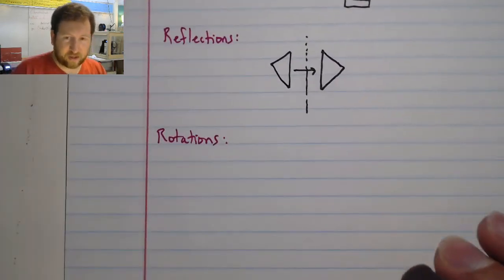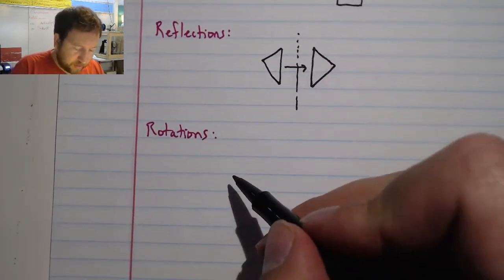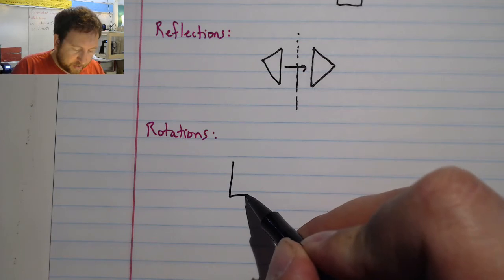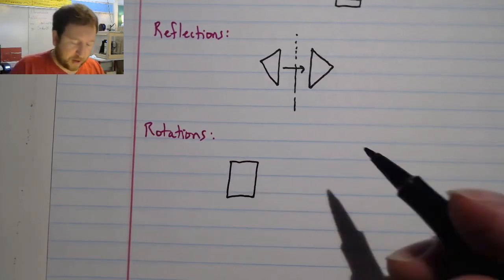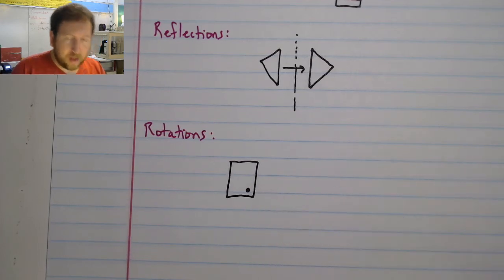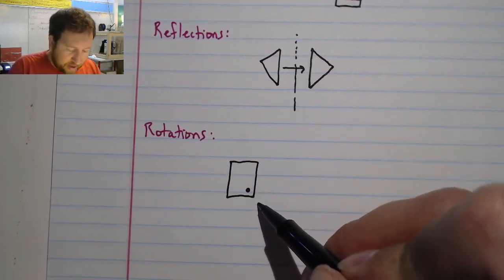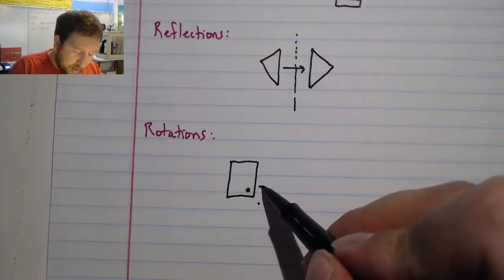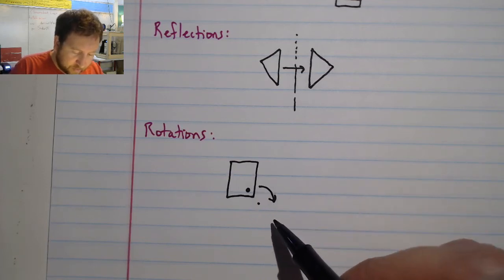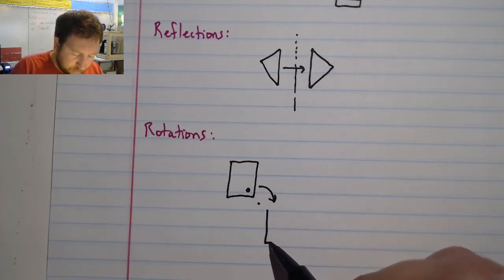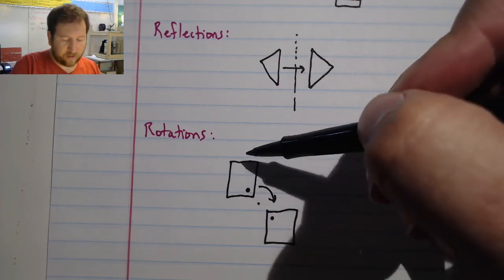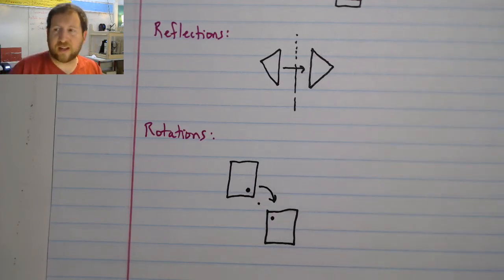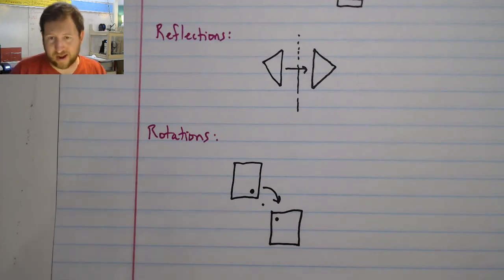And lastly, we have rotations. Rotations are simply, if I have a shape like this, sometimes we'll use dots or spots to denote them. I can have a point of reflection and I'm going to move it around this direction. So I'm then going to have my shape here and my dot is going to be here, kind of as if I twisted it and put it lower down.